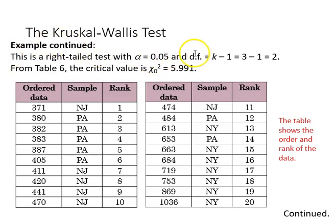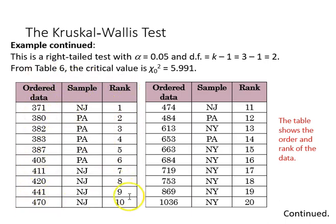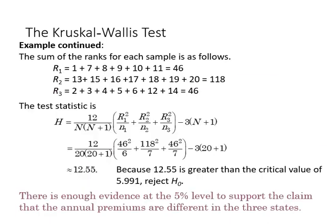This is a right-tailed test. Alpha is 0.05 and degrees of freedom k minus 1 equals 2, so from the table we find the critical value of chi-square to be 5.991. Here is the table with the ordered data, the sample, and the rank — showing New Jersey, Pennsylvania, and New York. The sum of ranks for each sample comes out to 46, 118, and 46 respectively.